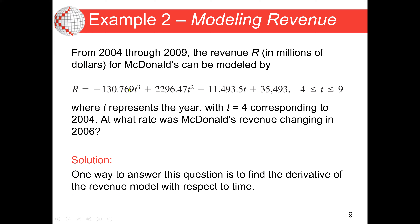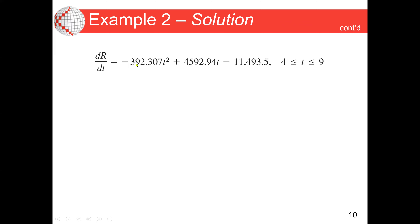To find the rate of change, we find the derivative of the revenue function using the power rule throughout. The constant term 35,493 gives zero. The derivative of 11,493t: the t disappears since the exponent drops to zero, leaving 11,493. For the next term, the exponent reduces from 2 to 1, and we multiply 2 by 2296.47. For the cubic term, we multiply 3 by 130.769 and the exponent reduces from 3 to 2. The constant derivative is zero.